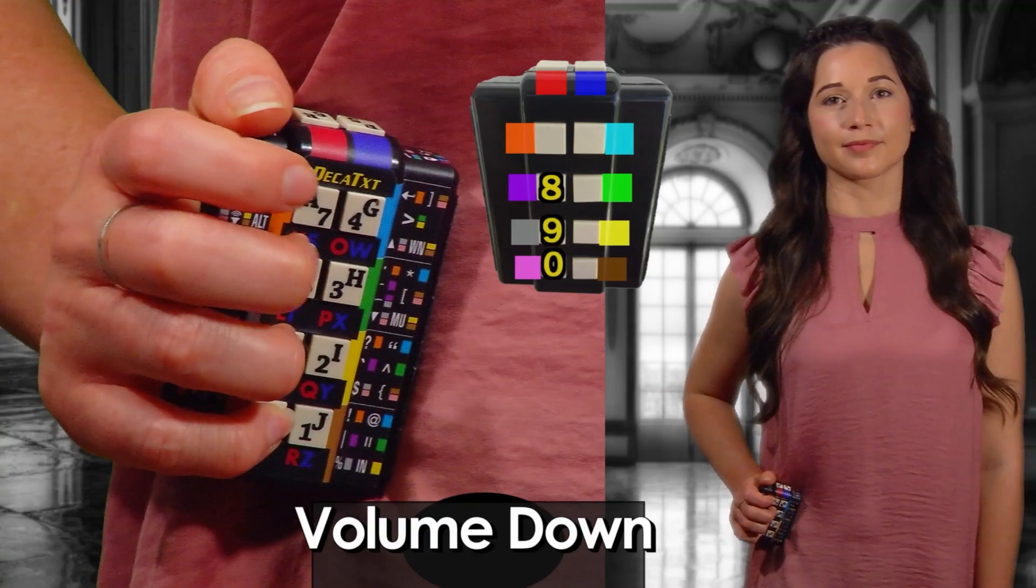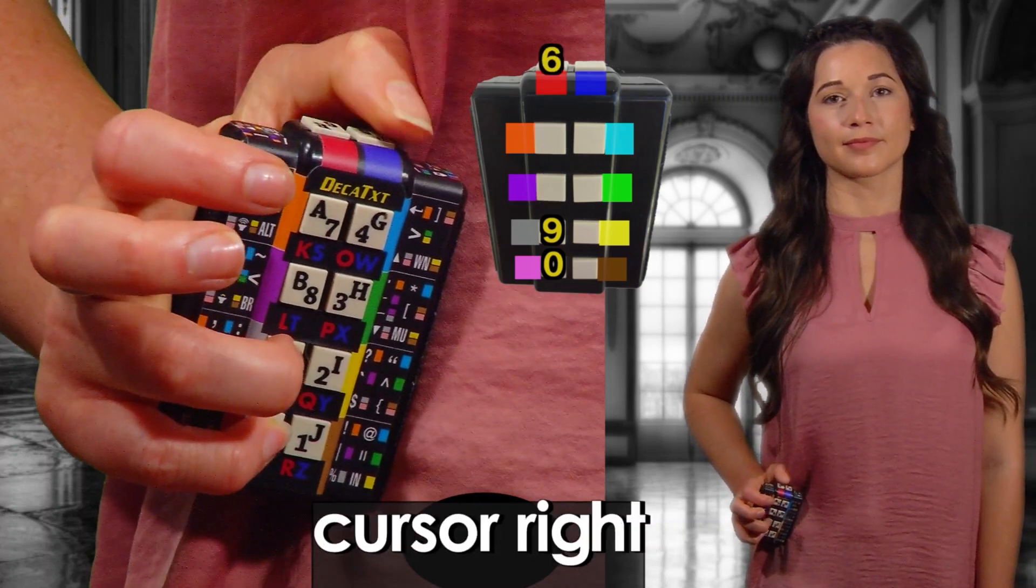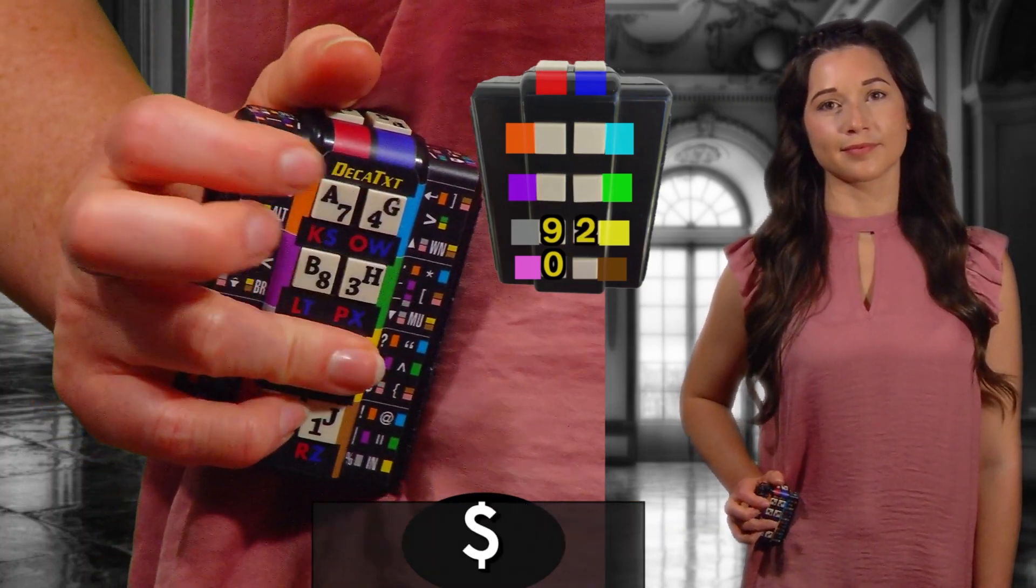Include pink 0 key and get volume down, volume up, cursor right, cursor left, cursor up, cursor down, dollar sign.